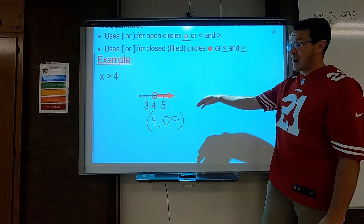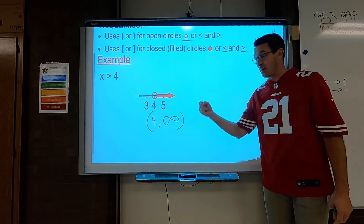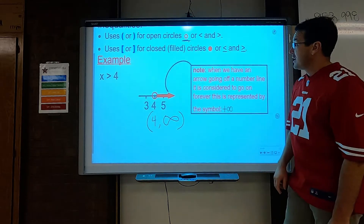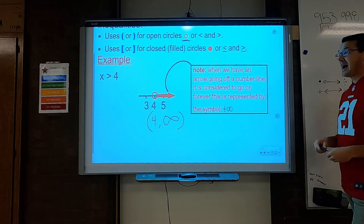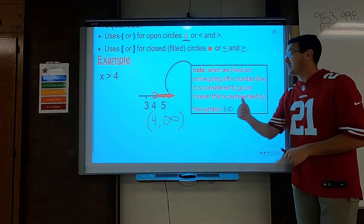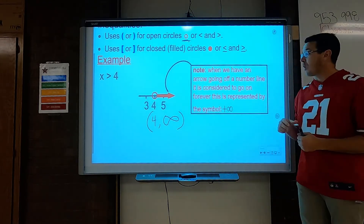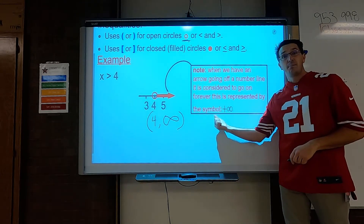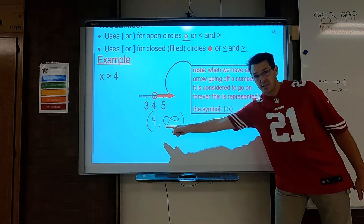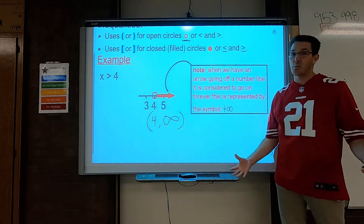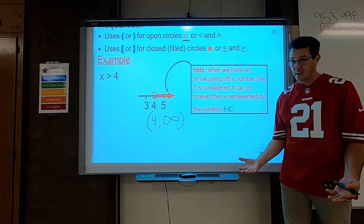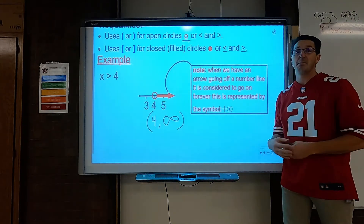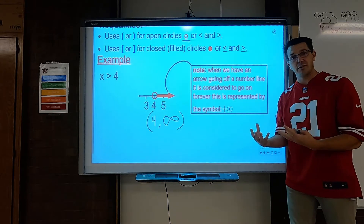And so instead of writing all that — x as an element — this is interval notation. Remember that note: when we have an arrow going off the number line, it is considered to go on forever. This is represented by the symbol positive infinity. Notice I didn't put a positive sign here. Just like if you tell somebody you're 15, you don't have to tell them that you're positive or negative. It's assumed — if I write infinity, that I'm talking about positive infinity.